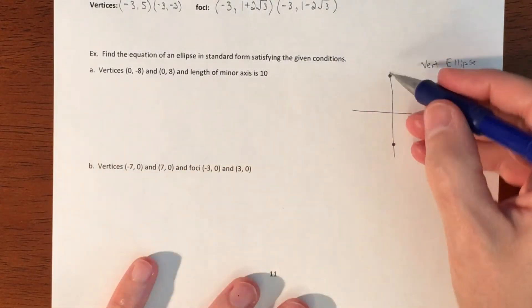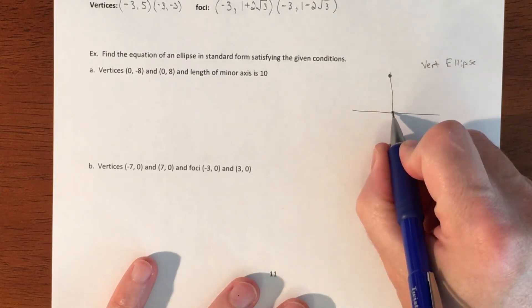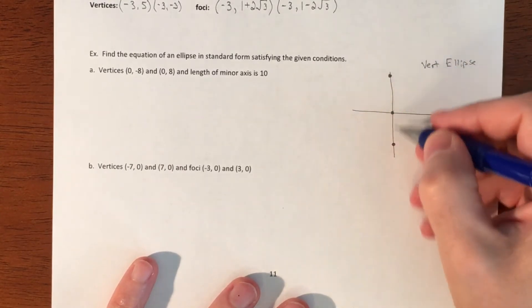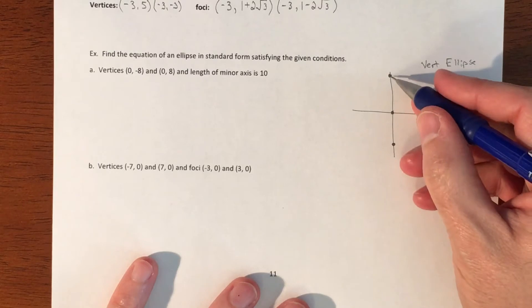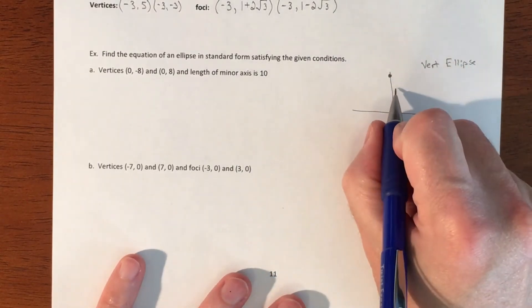The center is right in the middle here, so right in the middle between these two coordinates is at (0, 0), which is good. That distance is 8, which is your b value.